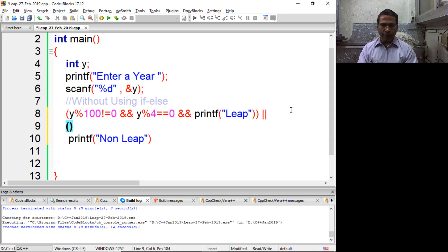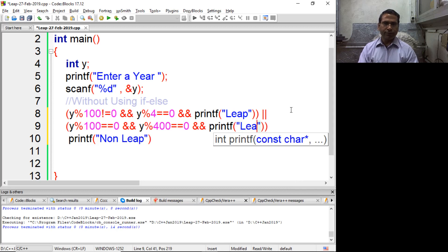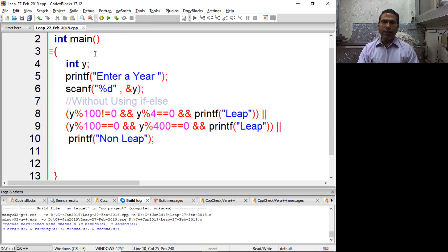Similarly, if year is divisible by 100 and also divisible by 400, we can say it's a leap year. But if both conditions fail, we'd like to print it's a non-leap year. Now compile it.